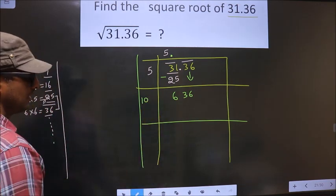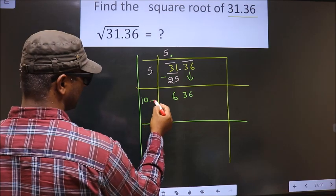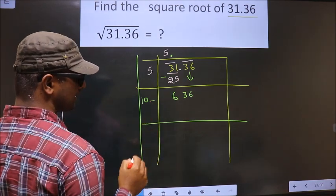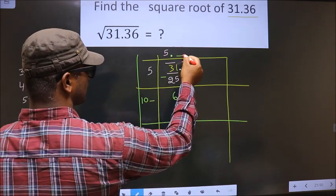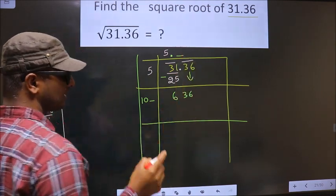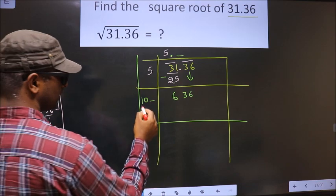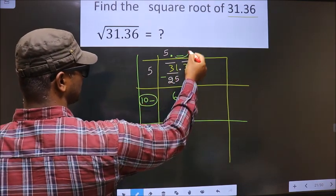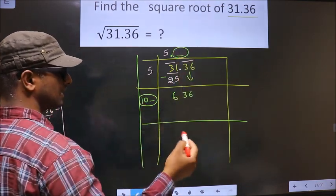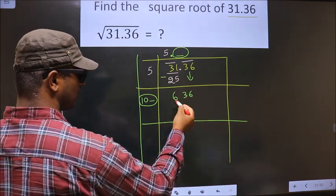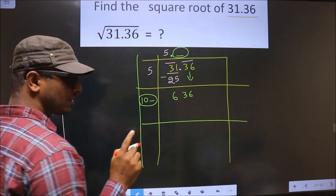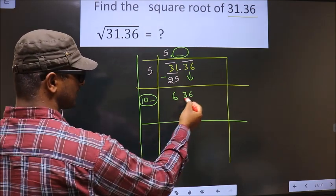Next, we should write a number here. The condition is: whatever number I write here, I should write the same number here also. And when you multiply this number and this number, the resulting number should be either equal to this or smaller than this, but it should not be larger than this.